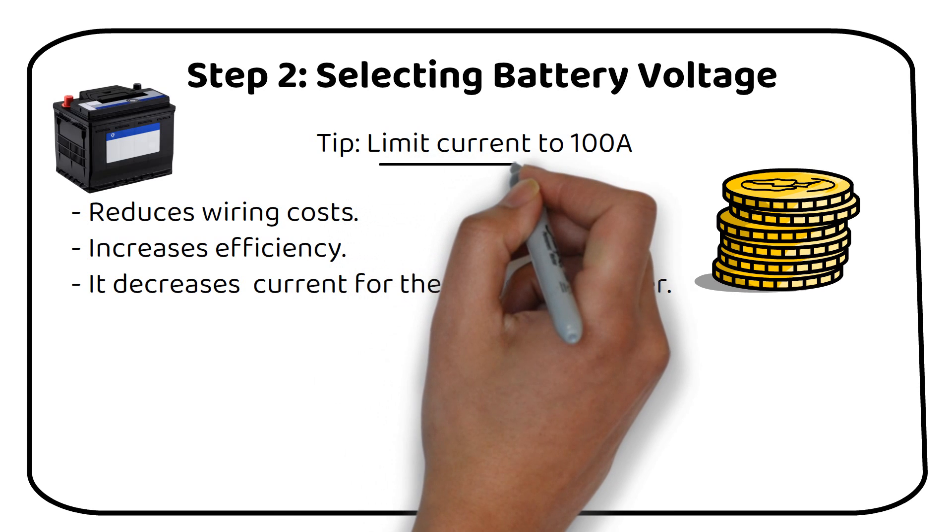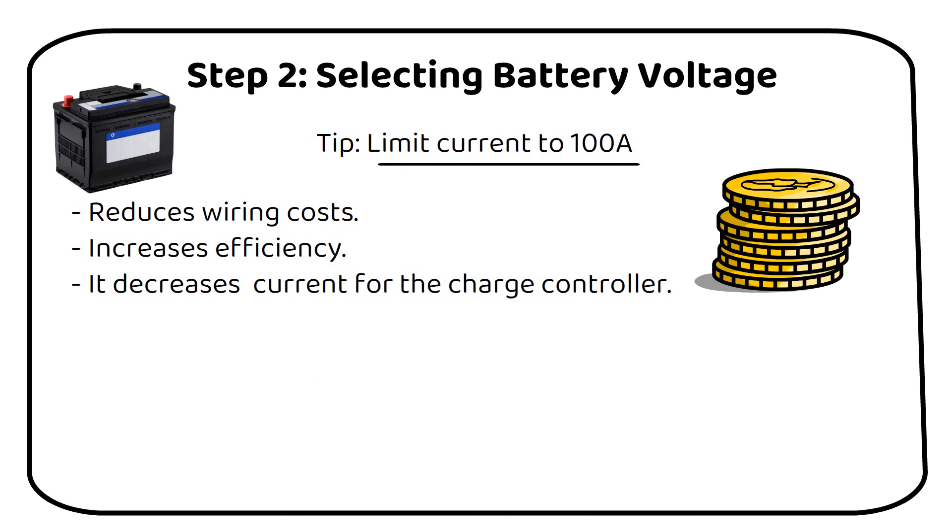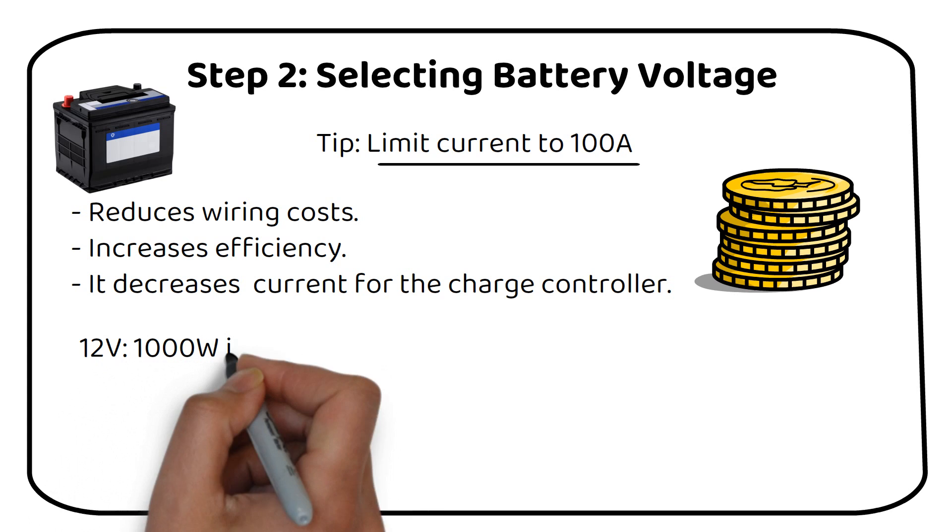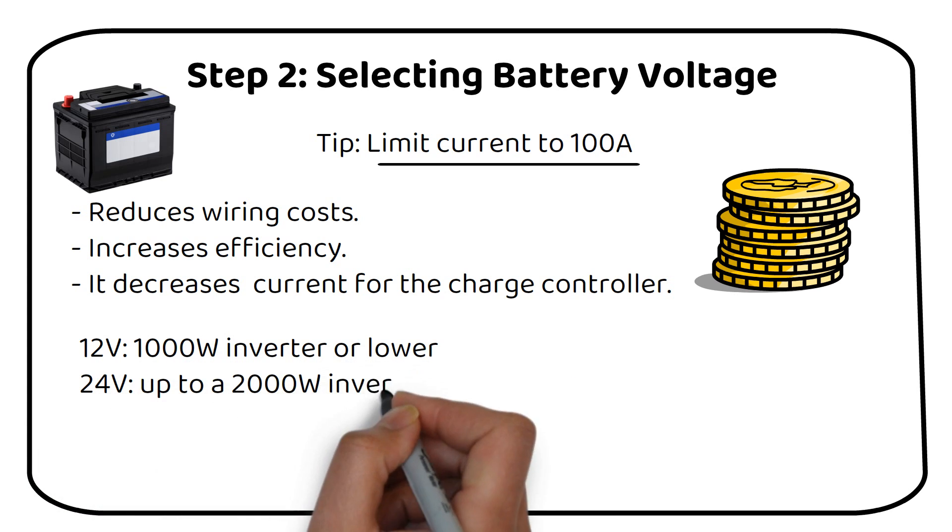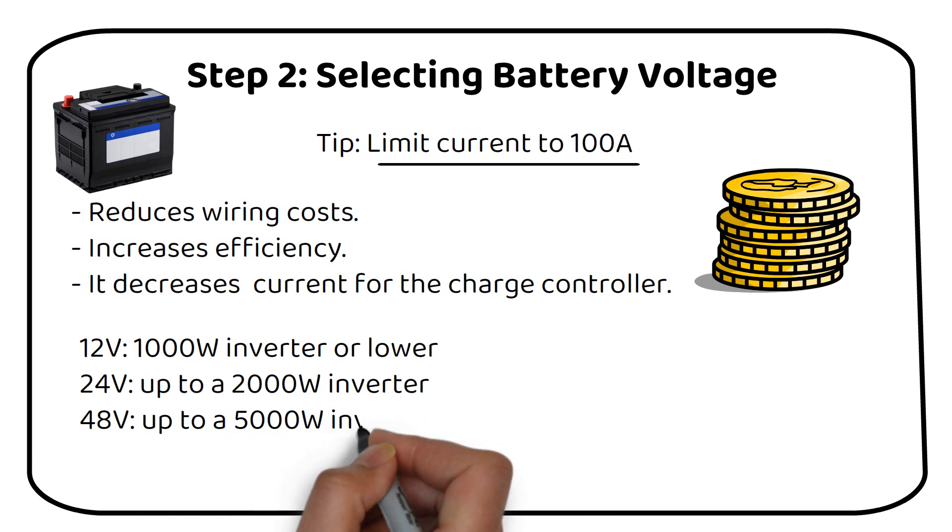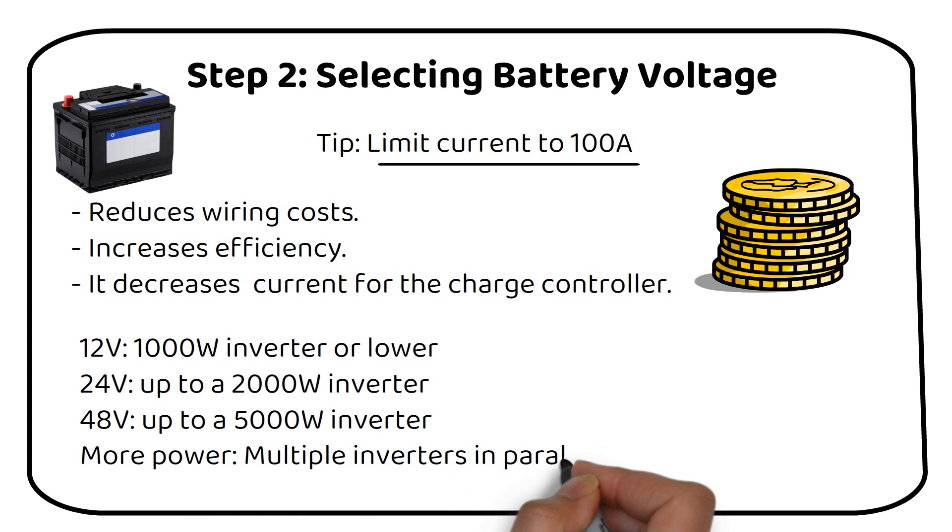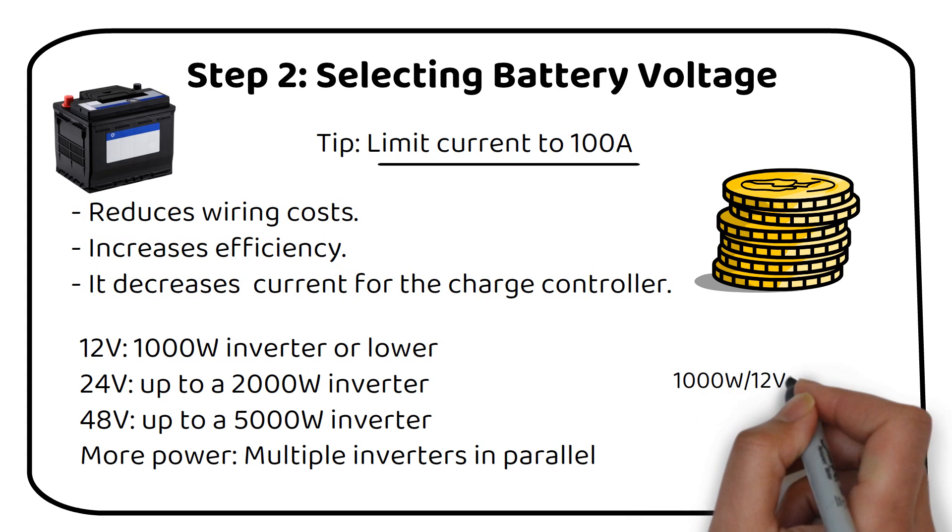To maintain the current below 100 amps, here are my recommendations for inverter sizes based on the battery voltage. For a 12 volt battery system, use a 1000 watt inverter or lower. For a 24 volt battery system, choose an inverter ranging from 1000 to 2000 watts. For a 48 volt battery system, you can go up to a 5000 watt inverter. If you need more power, consider adding multiple inverters in parallel. For example, if you're using a 1000 watt inverter with a 12 volt battery, the calculation would be 1000 watts divided by 12 volts resulting in 83 amps.